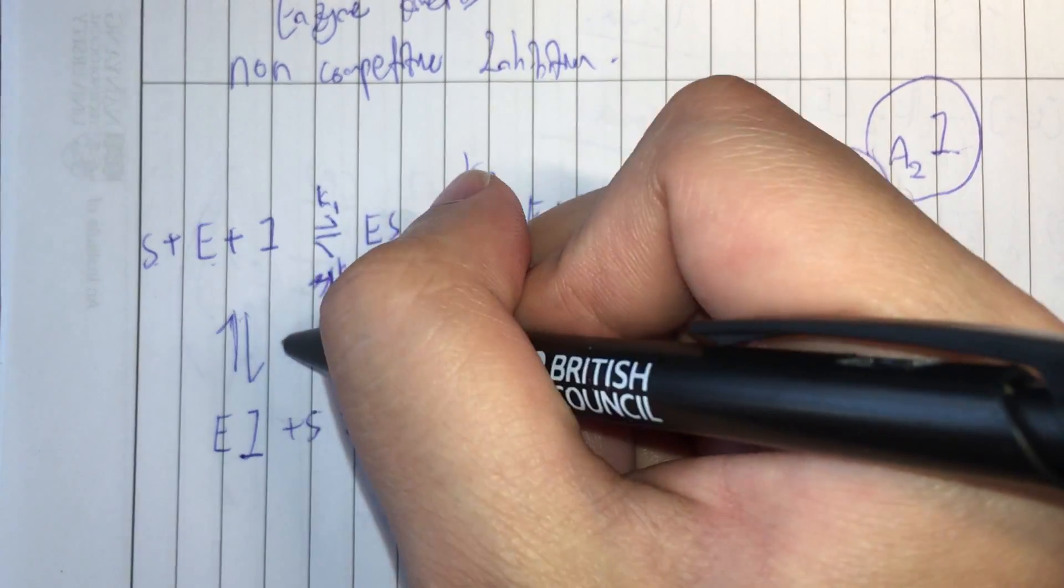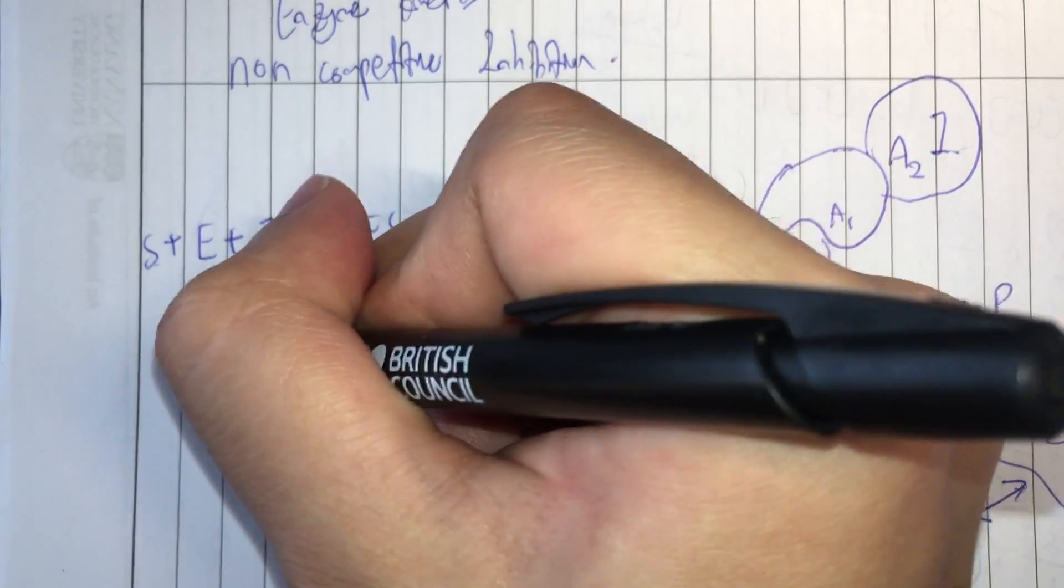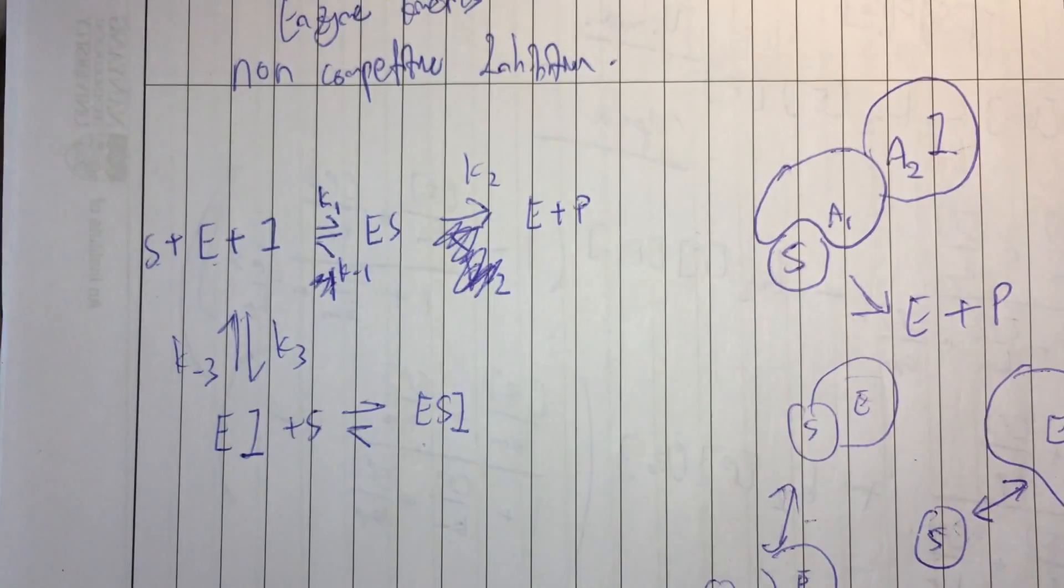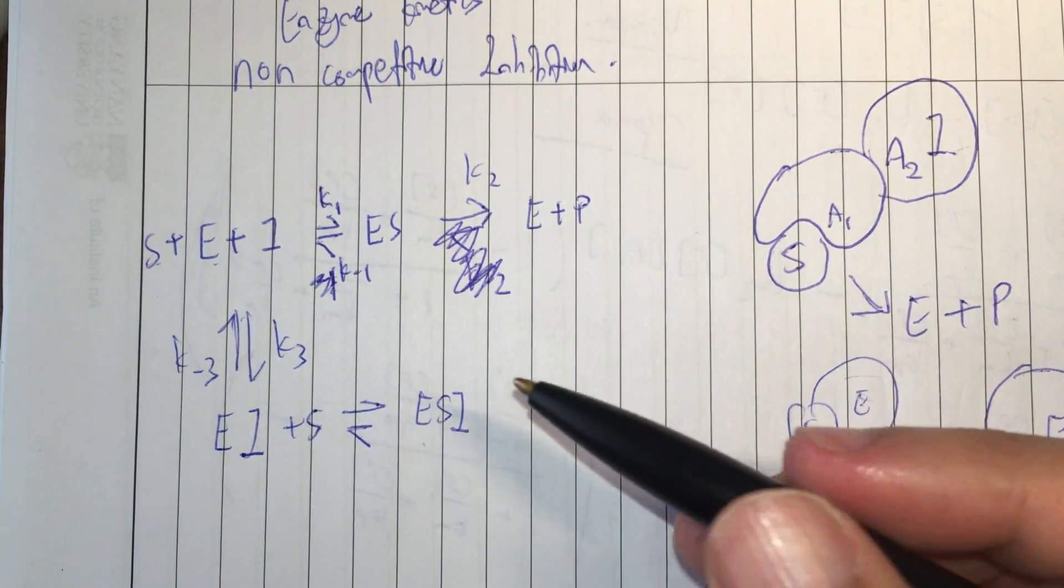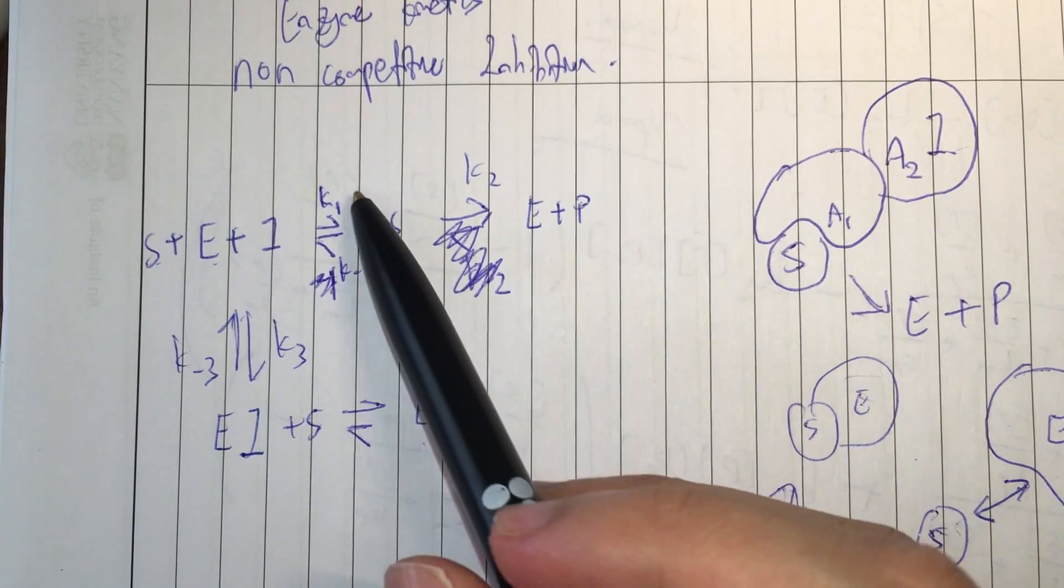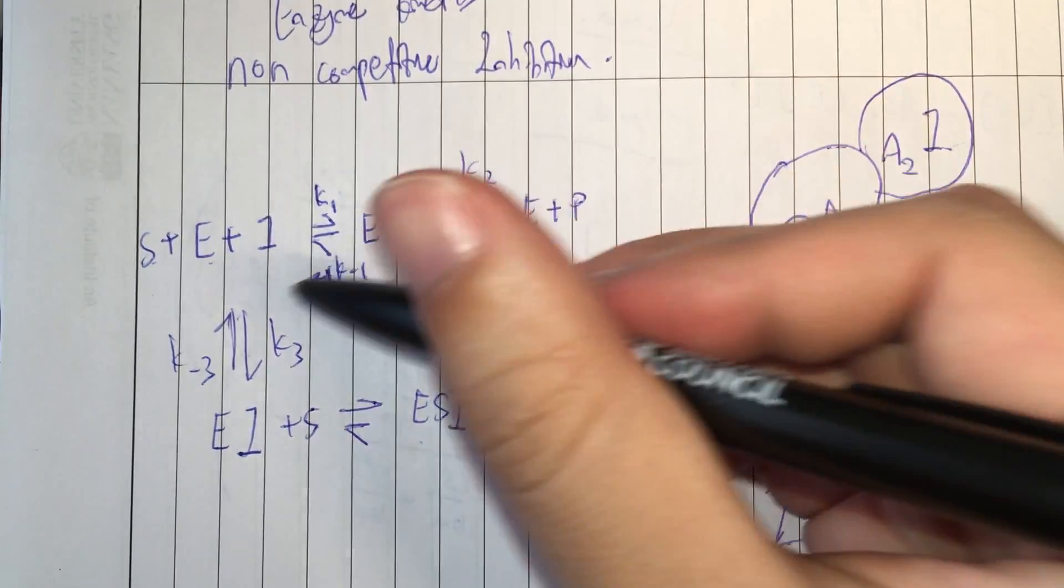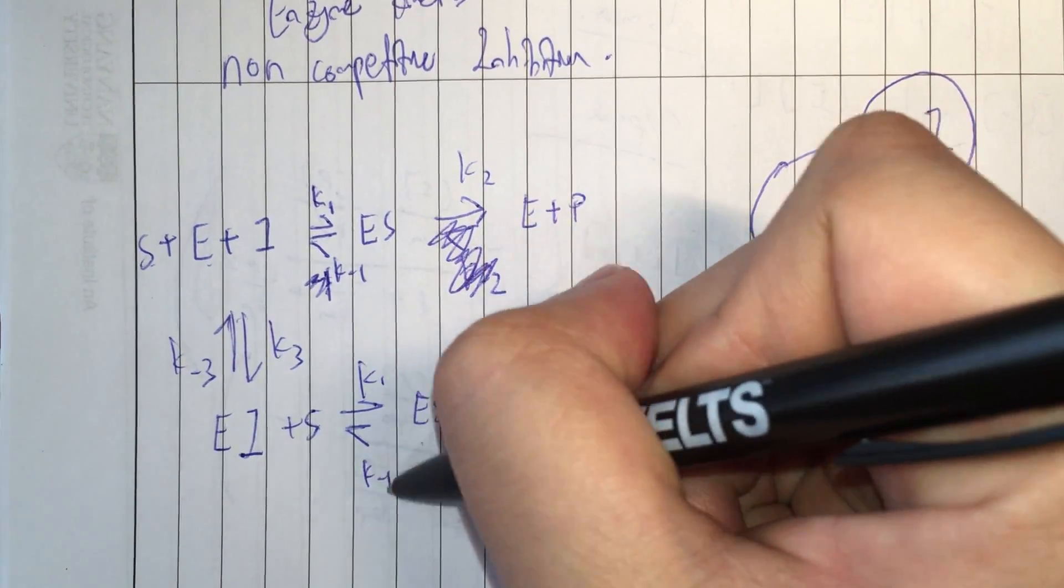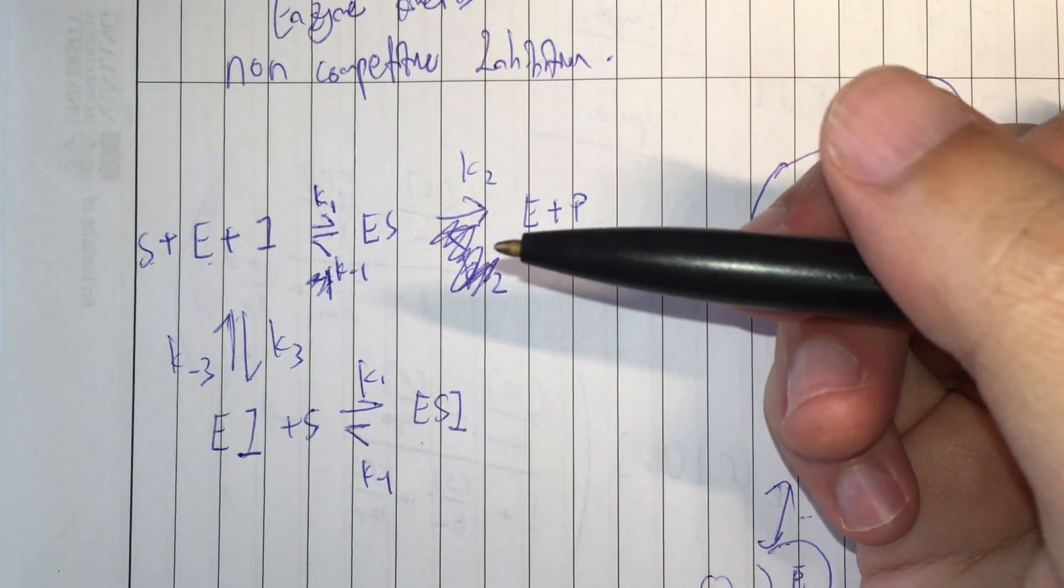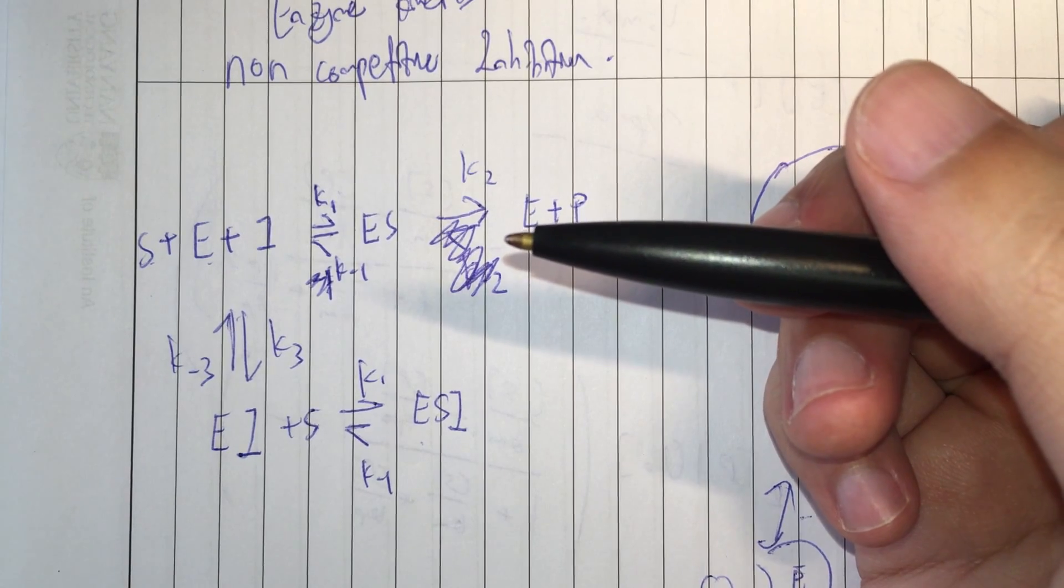So, what is this forward rate? This will be K3. This is K minus 3. And as explained earlier in our assumptions, we assume that the binding of the inhibitor doesn't affect this equilibrium constant. So the forward rate will still be K1. The backward rate will still be K minus 1. But these are the fundamental assumptions.